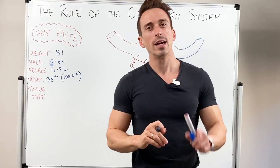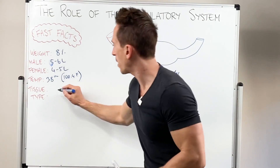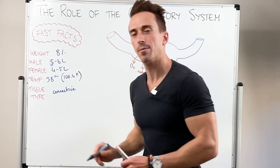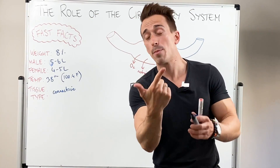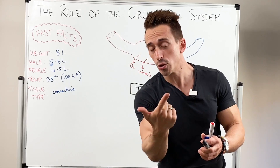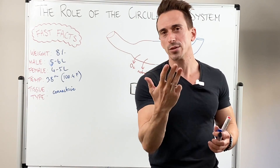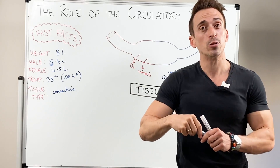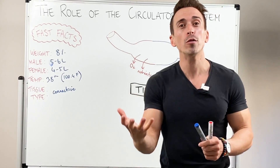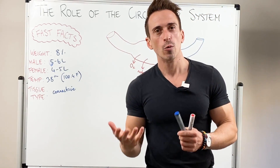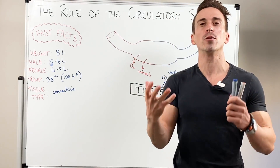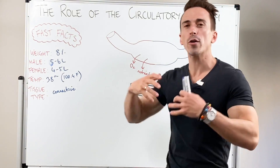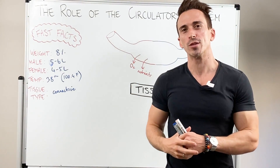And the tissue type is connective. Remember there are four tissue types within the body: connective tissue, epithelial tissue, nervous tissue and muscle tissue. Blood is connective tissue, which means it's the same tissue type as bone or cartilage, which means it's made up of cells, gels and fibres. So what we've worked through is a very quick introduction to the circulatory system.